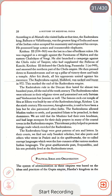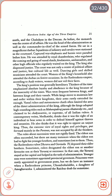The system of administration in these empires was based on the ideas and practices of the Gupta Empire, the Harsha kingdom in the north, and the Chalukyas in the Deccan. As before, the monarch was the center of all affairs — head of the administration as well as commander-in-chief of the armed forces. He sat in a magnificent Darbar where squadrons of infantry and cavalry were stationed in his courtyard. Captured elephants and horses were paraded before him. He was attended by royal chamberlains who regulated the coming and going of vassal chiefs, feudatories, ambassadors and other high officials. The king also dispensed justice. The court was not only a center of political affairs and justice but of cultural life as well, with dancing girls and skilled musicians in attendance.